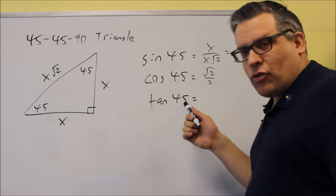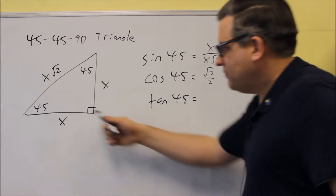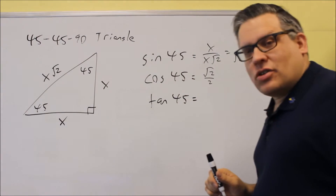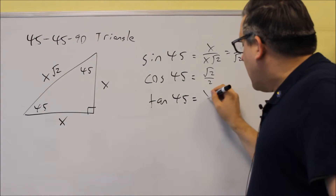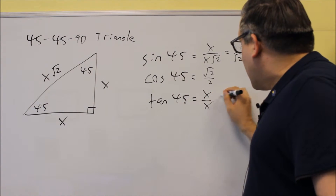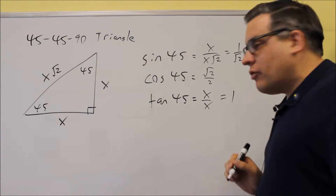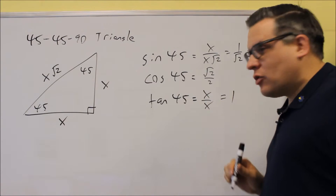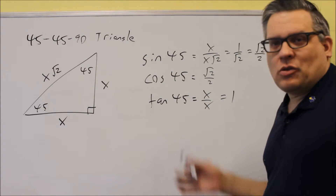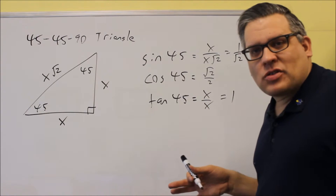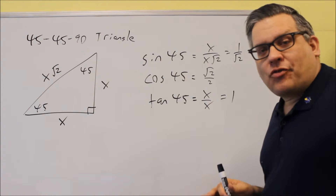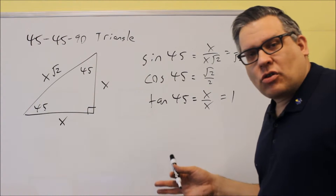For tangent 45, it's opposite over adjacent — x over x — and that gives you 1. So tangent 45 equals 1. Again, we get the exact same values that we got from the unit circle.